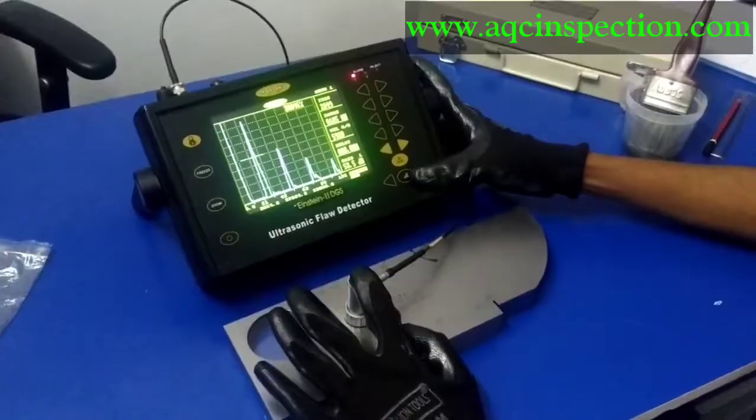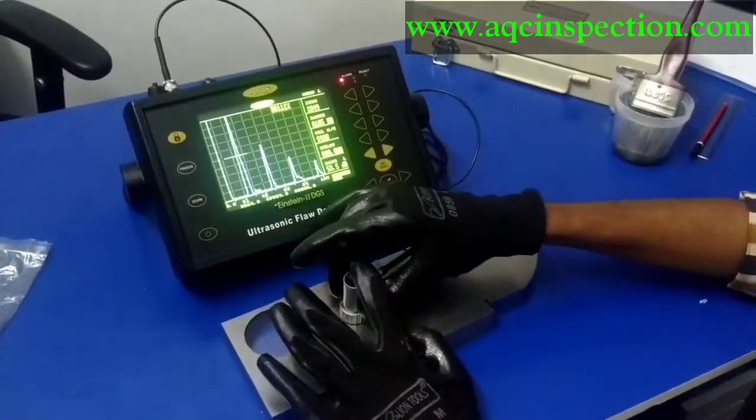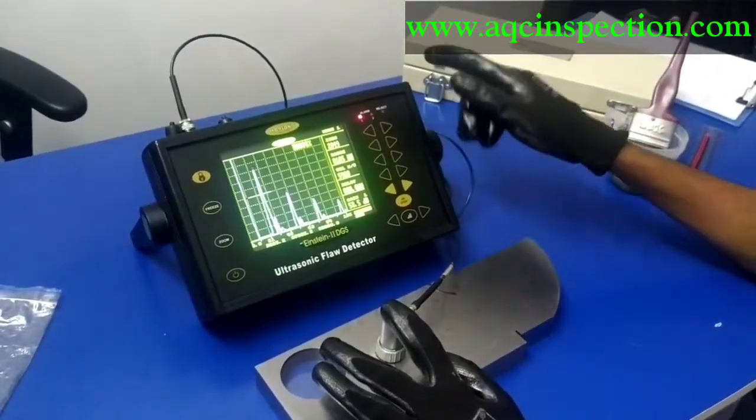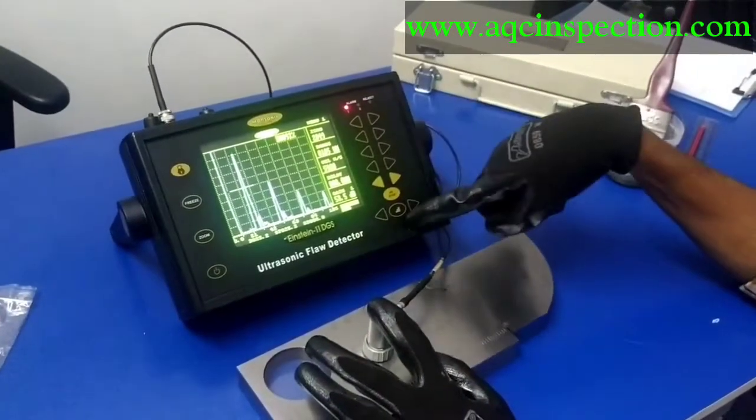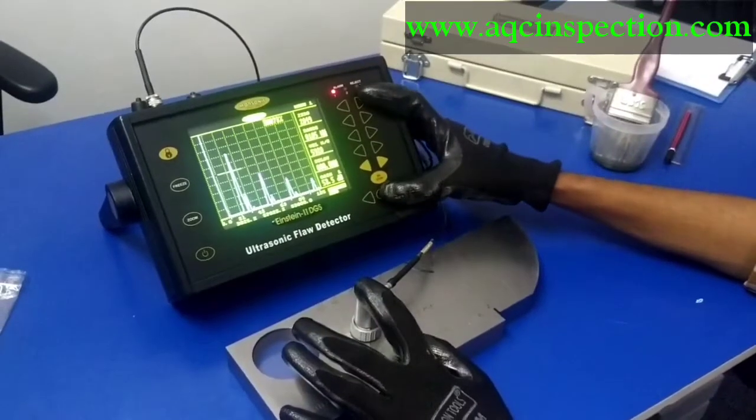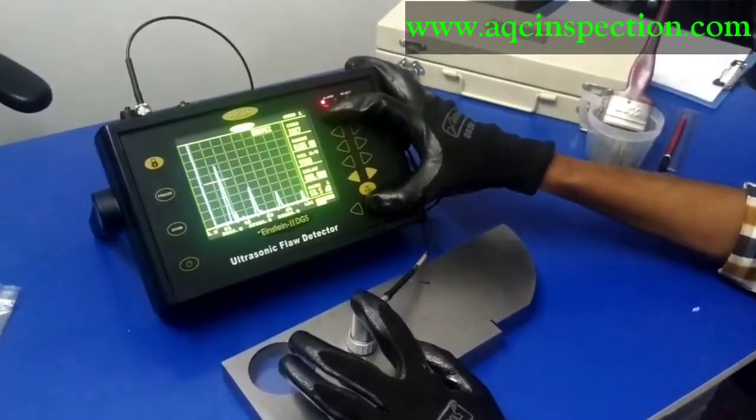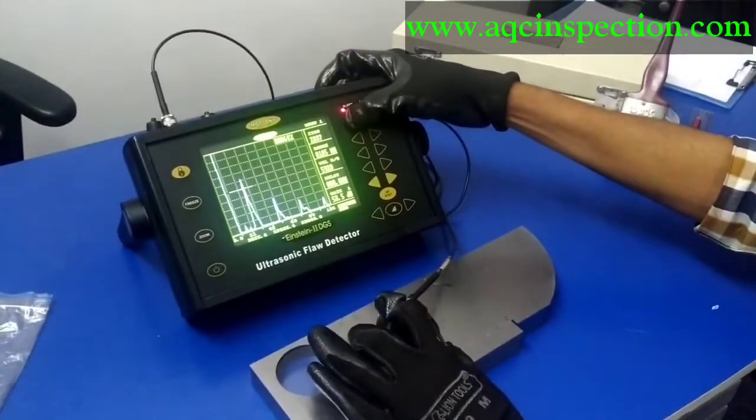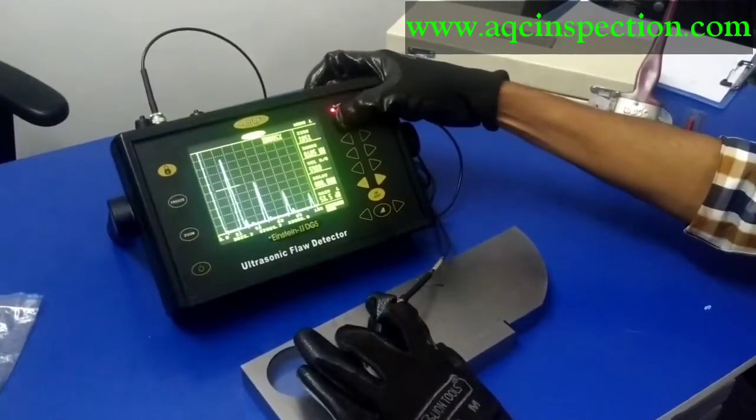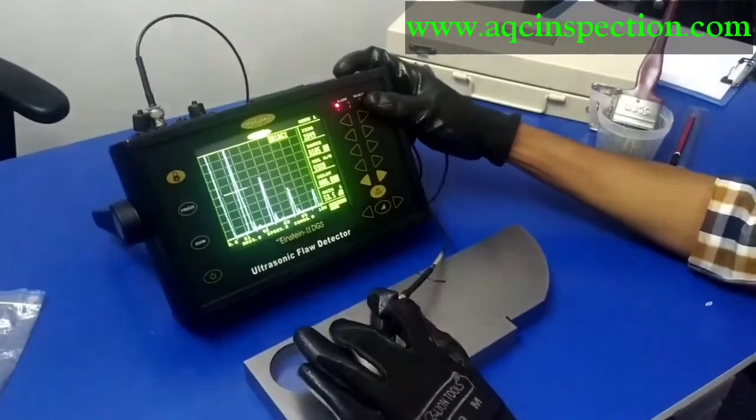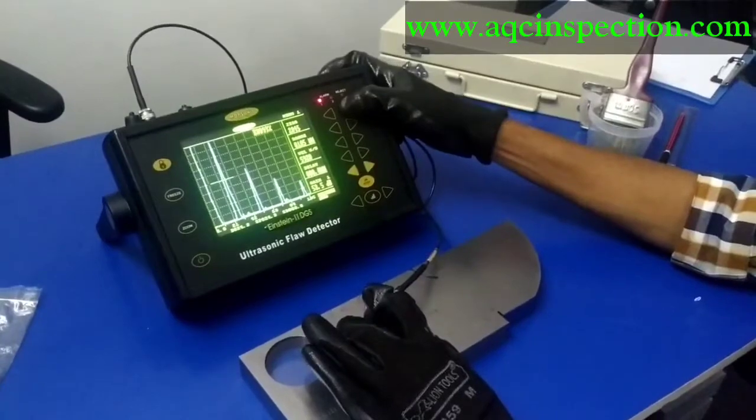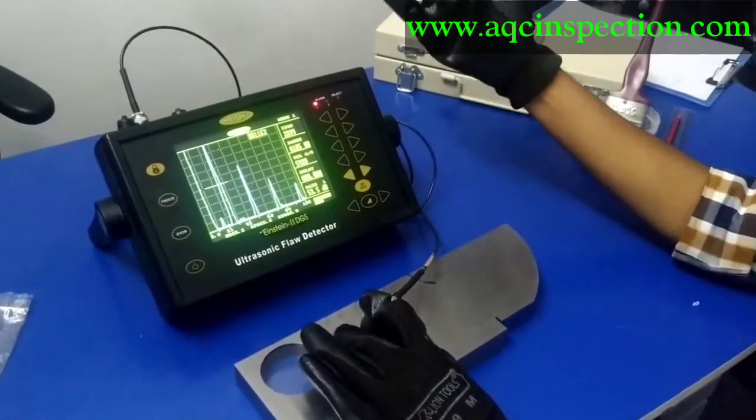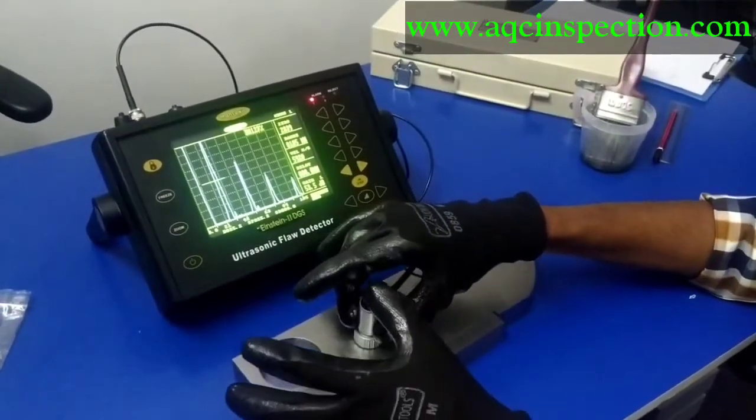I am going to adjust the probe zero so that I will get 25 mm as my first backwall. This key right here is called the hard key which is used for moving the values faster. So I am going to set this backwall at 25 mm. Already it is 26.